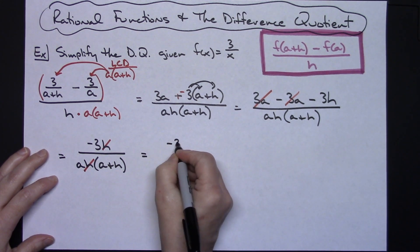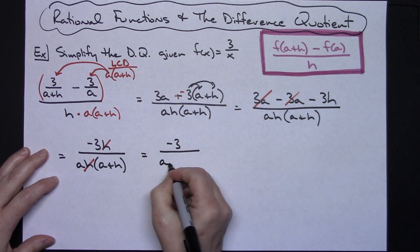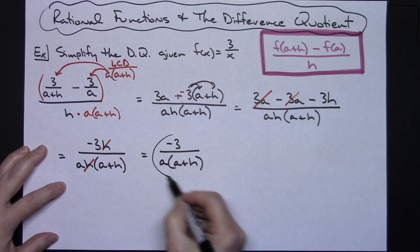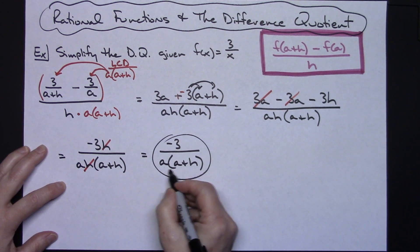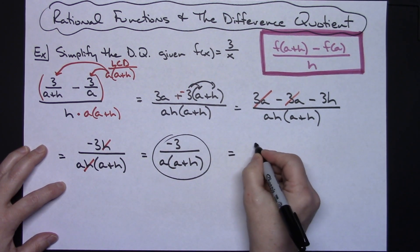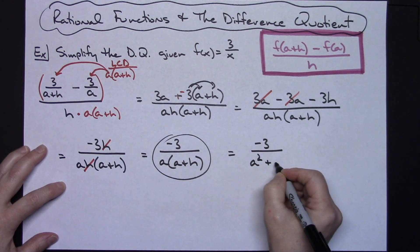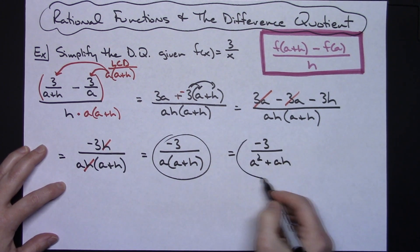You're then going to have a final answer of negative 3 over an a times an a plus h, and technically that right there would be a sufficient answer. If you've got a teacher that wants that a distributed, then it would look like negative 3 over an a squared plus an a h. Either one of those answers are acceptable.